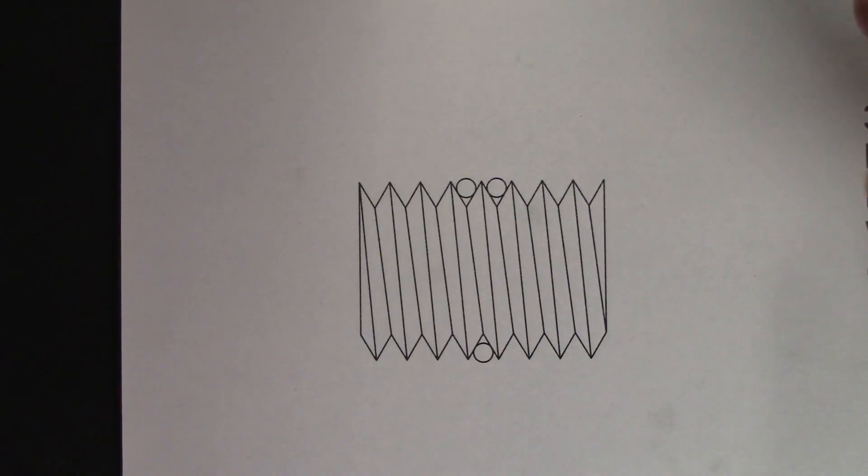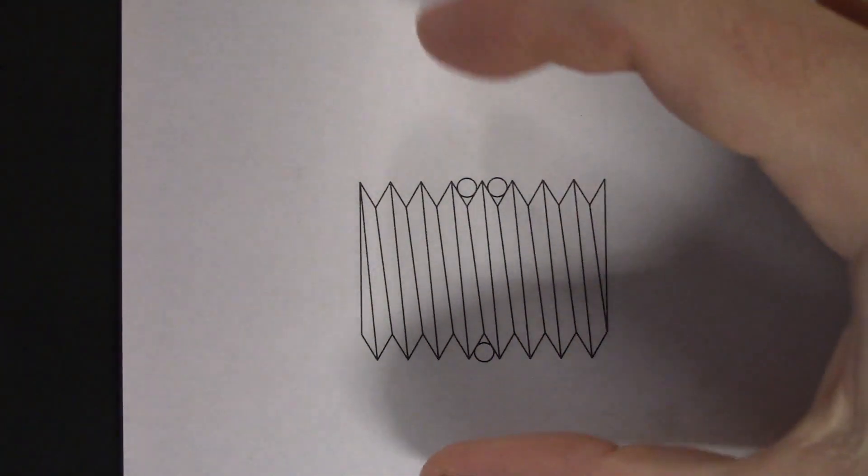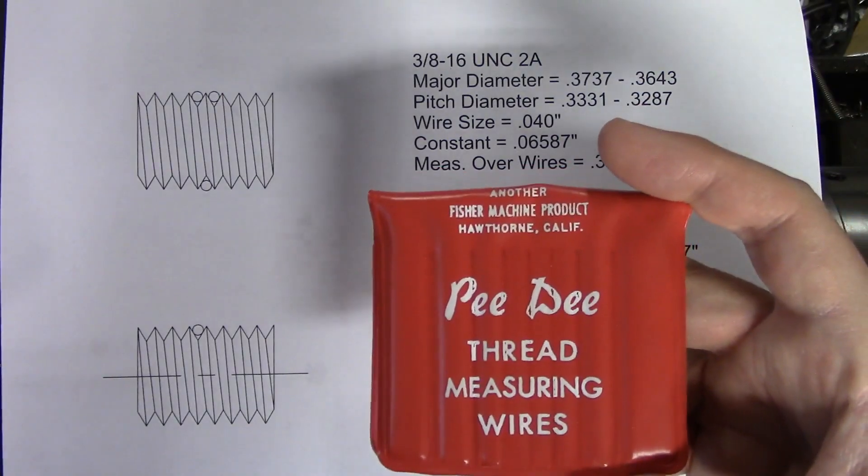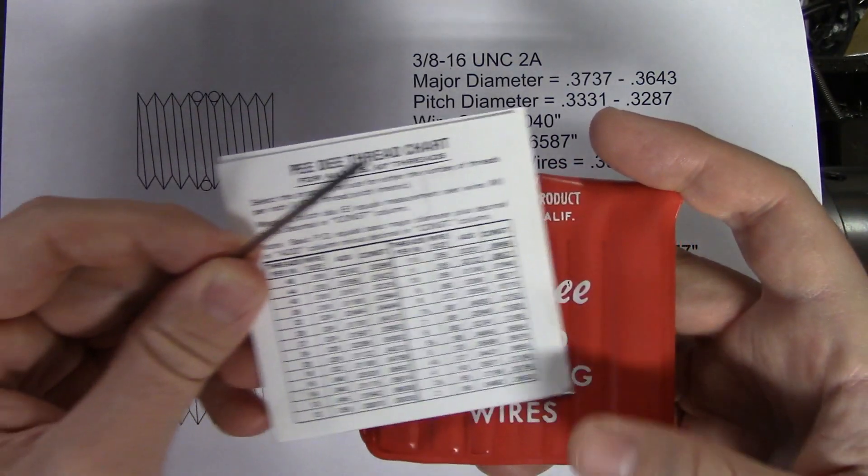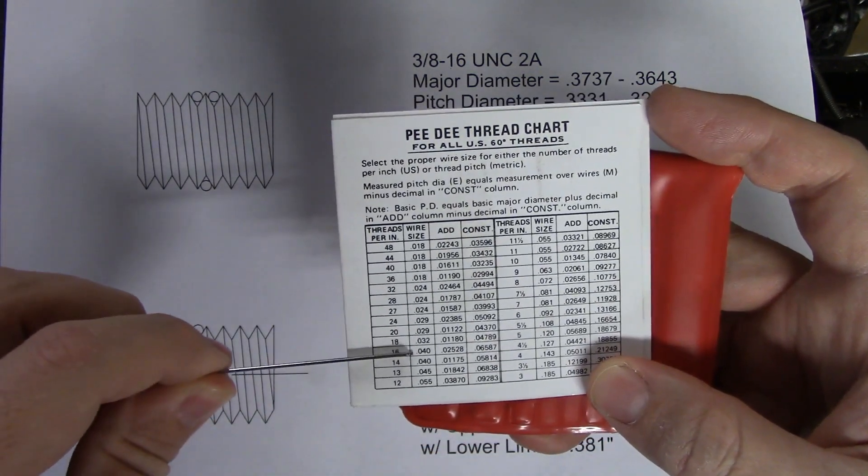In the three-wire method, you're laying two wires on one side of the thread and one on the other, then measuring across them with a micrometer. Each set of thread wires comes with a chart showing the size of wires you should use for a given thread pitch. In this case, 40 thousandths wires.